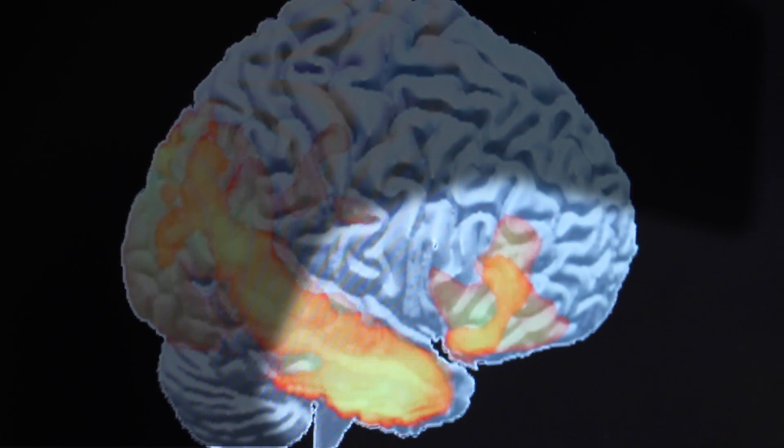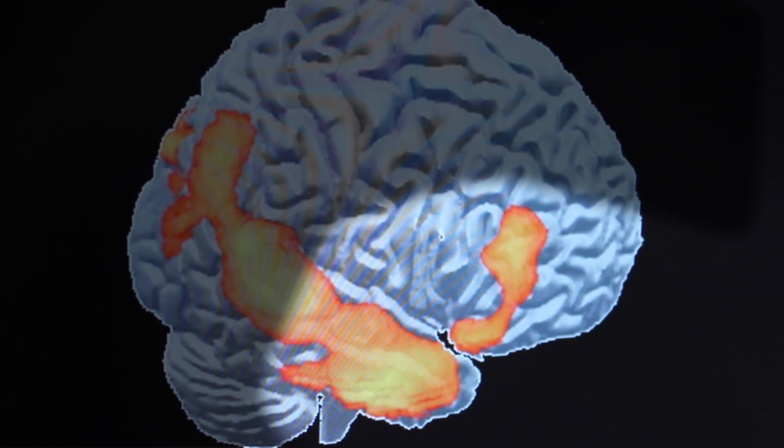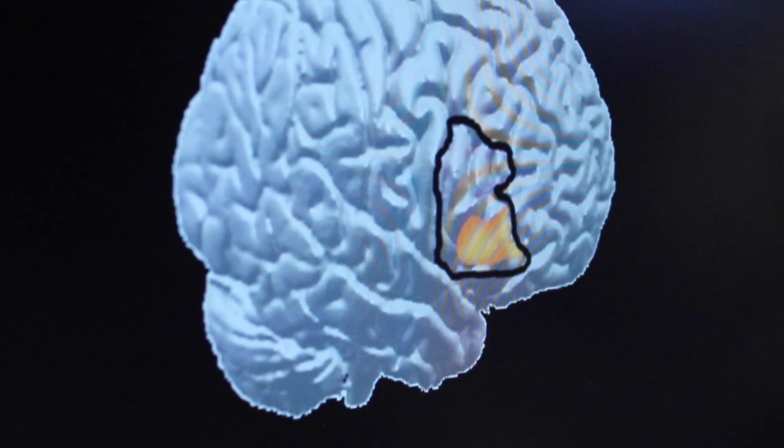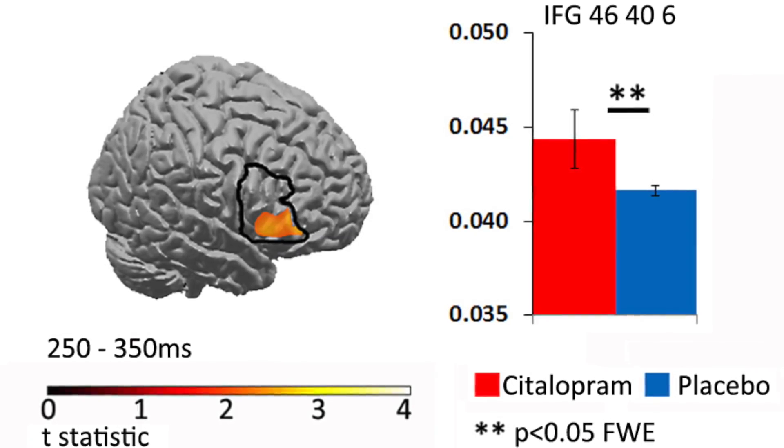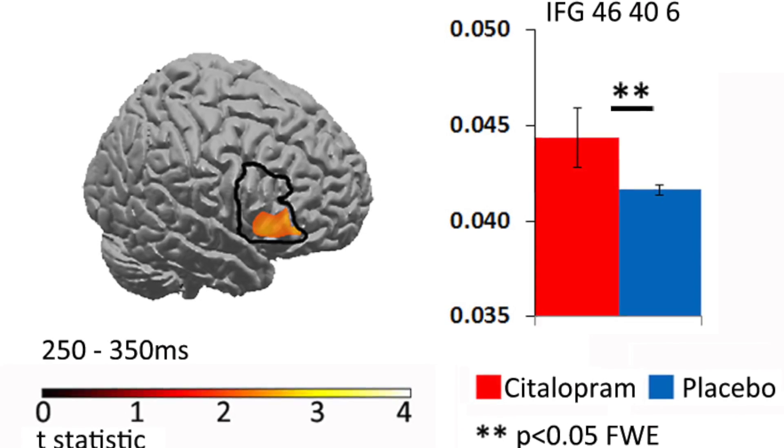These regions show reduced activity in patients with frontotemporal dementia. But of particular interest was what happens when we give them a citalopram tablet. We showed that this region here, the right inferior prefrontal gyrus, showed an increased activation after taking that single dose.